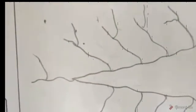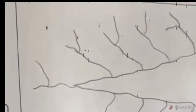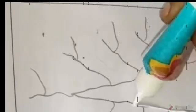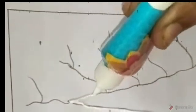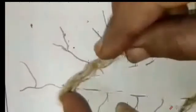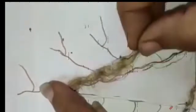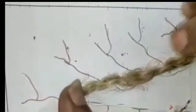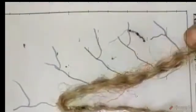Got it? Now apply some fevicol on this main root. Like this. Children, you should use less amount of fevicol. Else your activity will get messy. Now stick this jute on this fevicol. Like this. Our main root is ready.